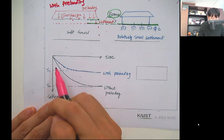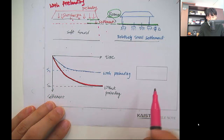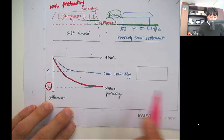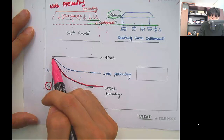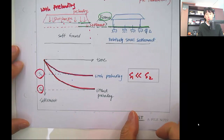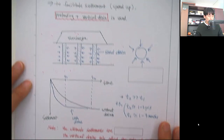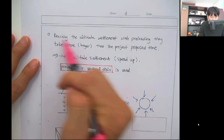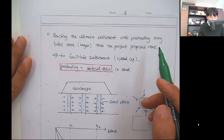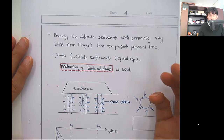However, reaching the ultimate settlement with preloading may take longer than the project's proposed timeline. So you need to speed up the settlement. To speed up the settlement, vertical drains are used. The basic principle is that you install drainage paths — which can be sand drains, paper wick drains, or geotextile — into the clay layer.